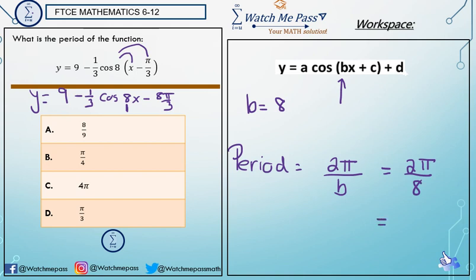When we simplify 2π over 8, we're going to get π over 4 because 2 goes into 2 once and 2 goes into 8 four times. So the period of this function is π over 4. And now you're an expert.